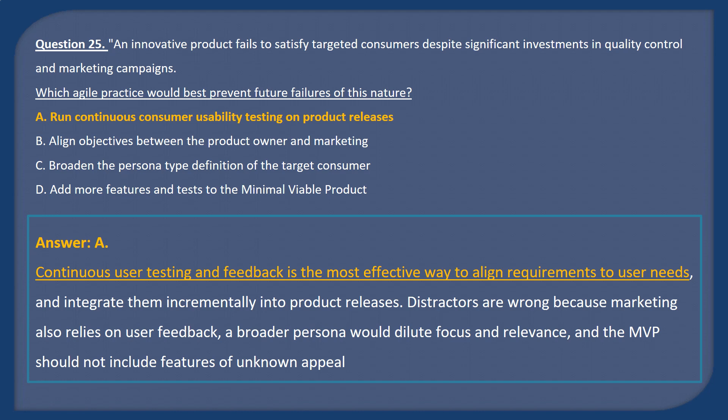Answer A. Continuous user testing and feedback is the most effective way to align requirements to user needs and integrate them incrementally into product releases. Distractors are wrong because marketing also relies on user feedback, a broader persona dilutes focus and relevance, and the MVP should not include features of unknown appeal.